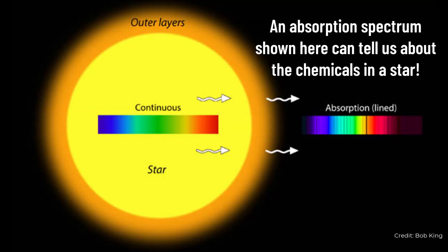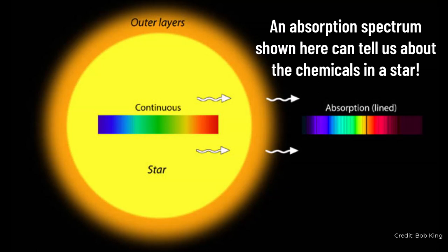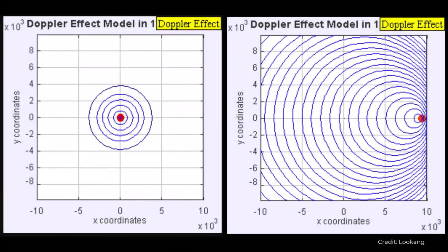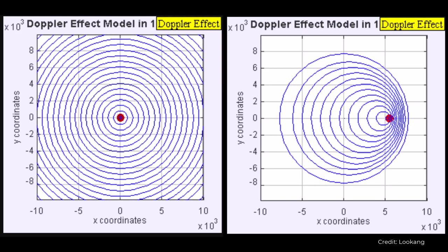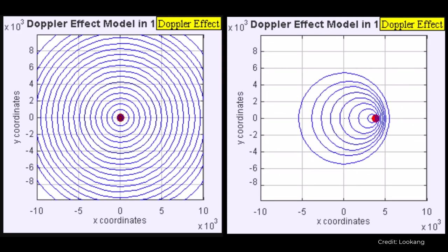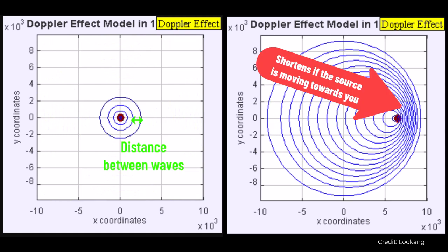But before we can begin to analyze the light in this way, we need to understand the way light travels through space and how it's changed by the universe. Waves emitted from a stationary object are not the same as waves emitted from moving ones relative to observers. You can imagine that as a source of waves moves towards you, the frequency of such waves increases. Moreover, the distance between each crest of a wave decreases, or its wavelength shortens.